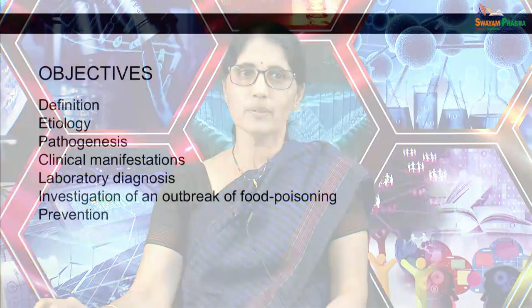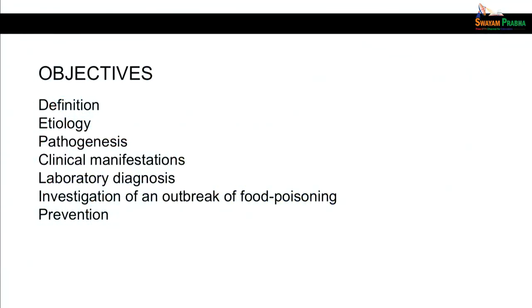The objectives for this session are as follows. At the end of this session, you will be able to define what food poisoning is, describe the etiology, pathogenesis, clinical manifestations, and laboratory diagnosis of food poisoning. You will also be able to describe how to investigate an outbreak of food poisoning and how to prevent food poisoning.